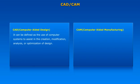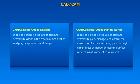CAM, or Computer Aided Manufacturing, can be defined as the use of computer systems to plan, manage, and control the operations of a manufacturing plant, through either direct or indirect computer interface with a plant's production resources.